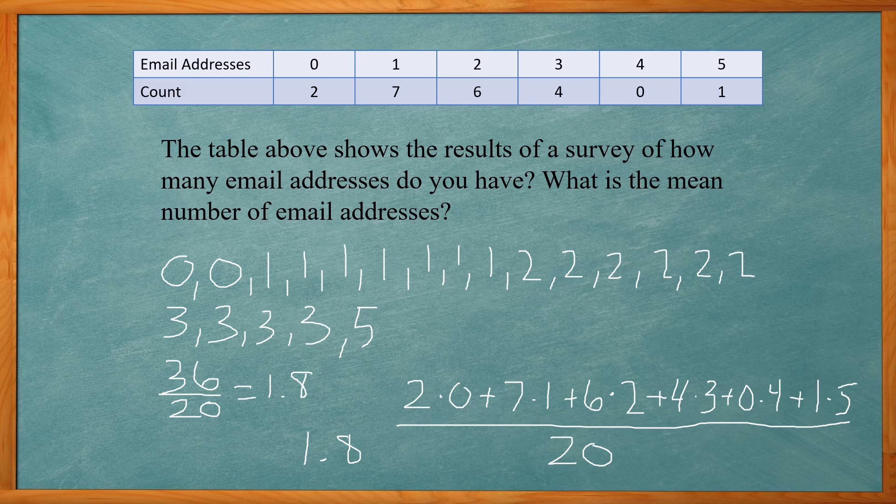So we add 2 times 0, 7 times 1, 6 times 2, 4 times 3, 0 times 4, 1 times 5. That goes on the top of the fraction and then your total count will go on the bottom. You divide those two and that will give you your mean. So hopefully this helped you out.